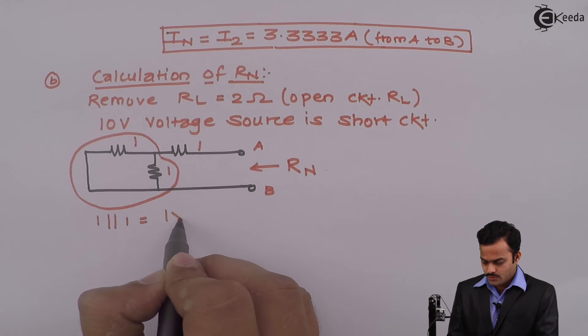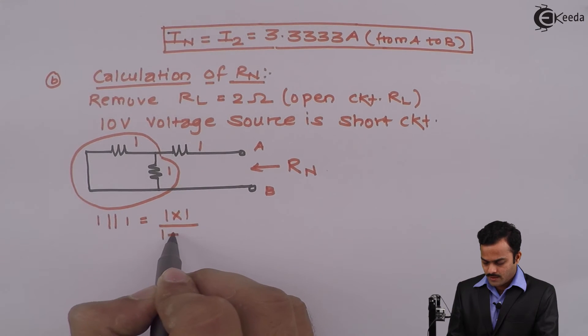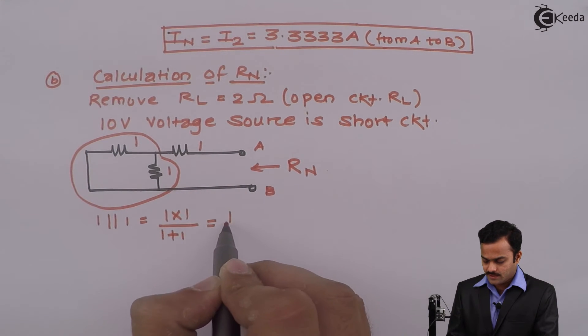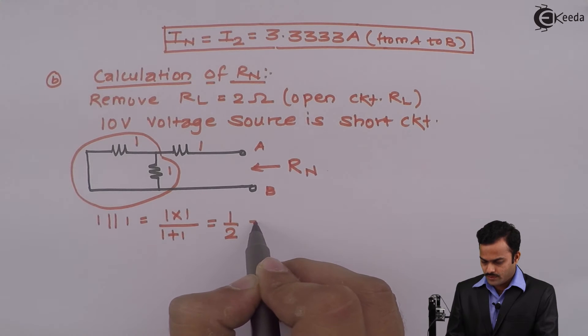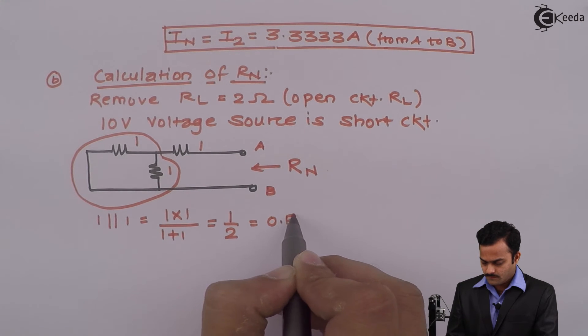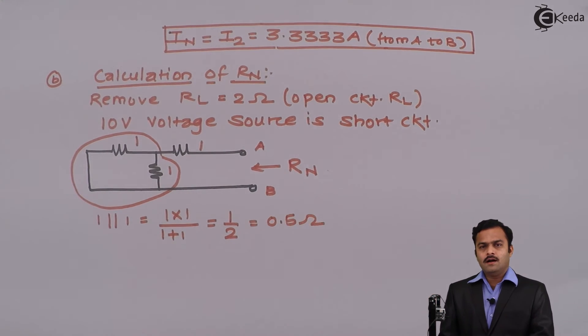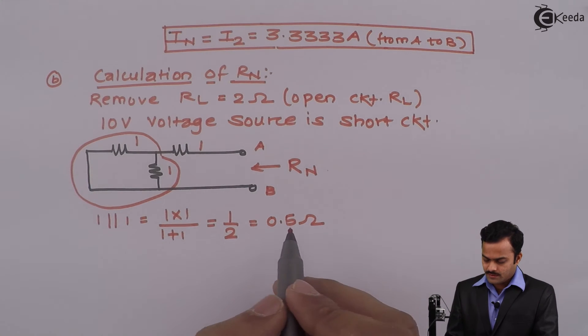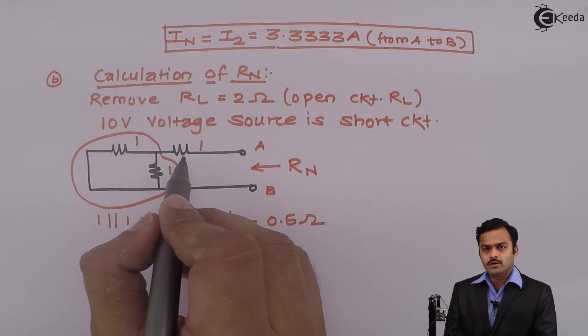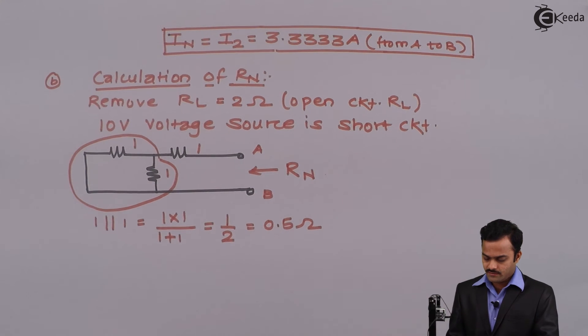So it is 1 into 1 divided by 1 plus 1. The answer I will get is 1 by 2, which is nothing but 0.5, and this 0.5 will come in series with this 1 ohm.